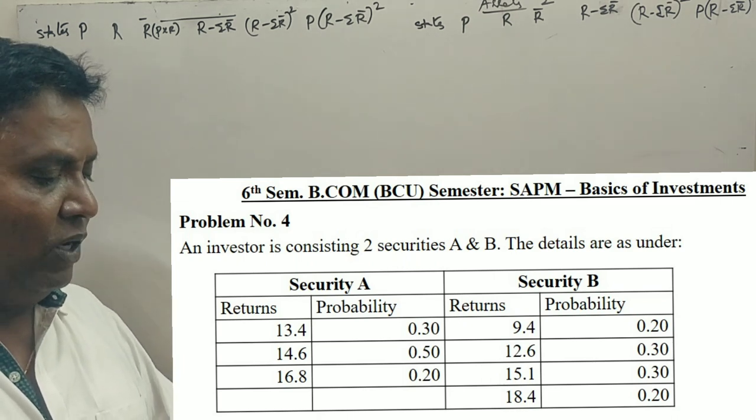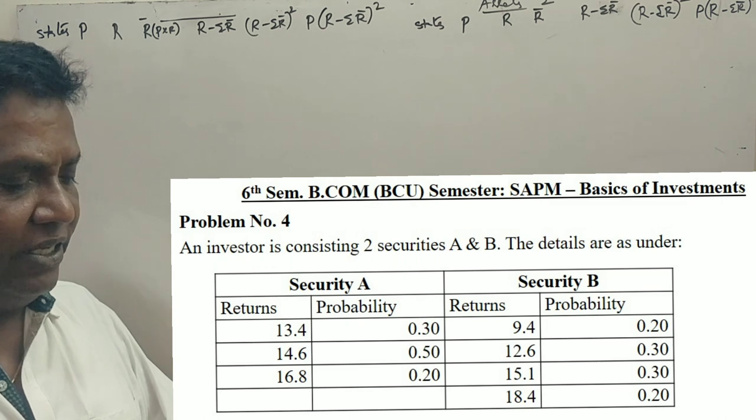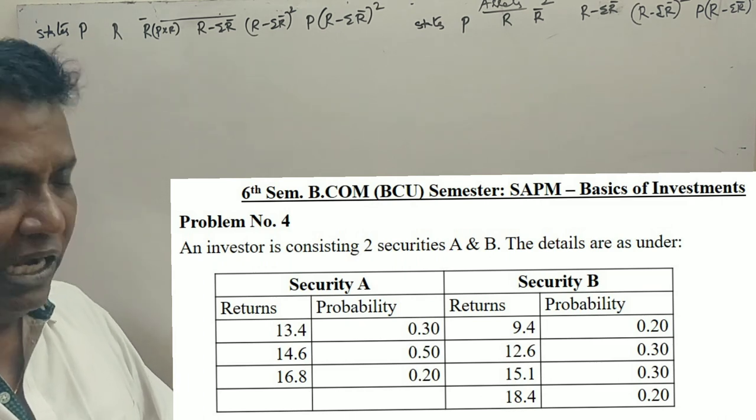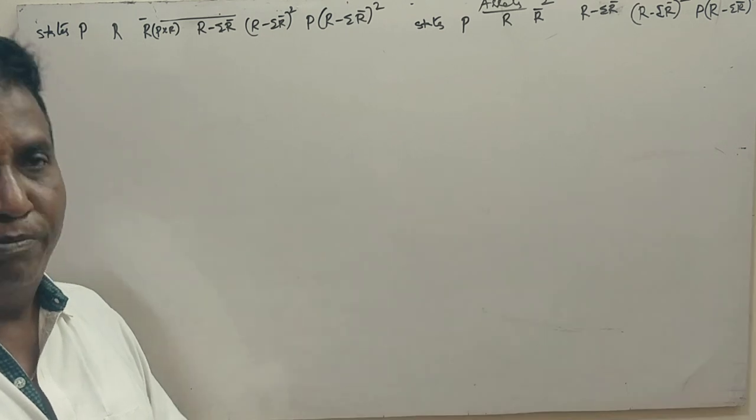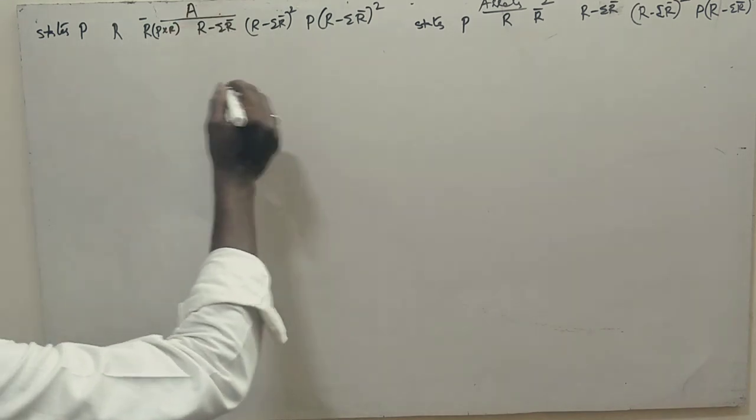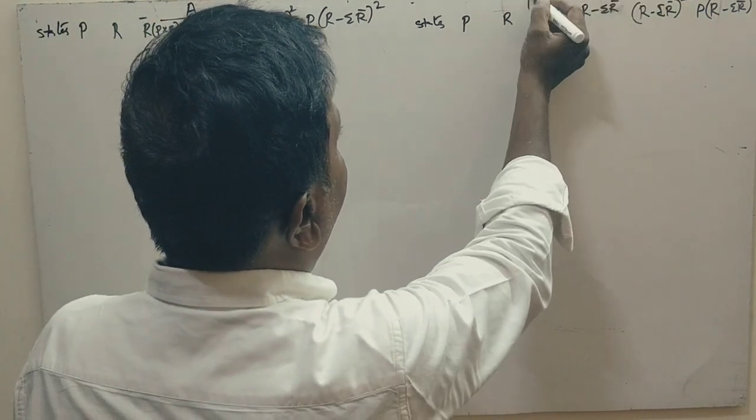Second question: what is the return an investor earns if he invests 60% of his funds in security A and 40% in security B? So, first of all, let's look at Security A and Security B data.